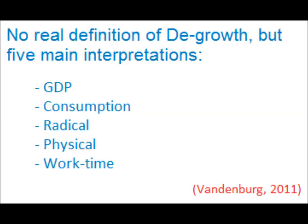Degrowth economics has no single definition, but there are five main interpretations. The first two — GDP degrowth and consumption degrowth — work under the principle that the capitalist system could comfortably slow, stop, and then degrow. Not a recession, but a comfortable reduction in production and consumption without reducing quality of life. Radical degrowth economists believe there is a greater sense of urgency: that the economy should slow, stop, and degrow much faster, because they believe we have already overstepped the limits of our planet's production.